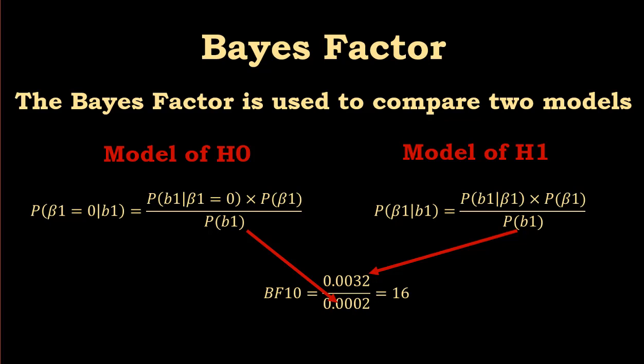When the Bayes factor value is higher than 1, that means the model of the alternative hypothesis is more likely than the model of the null hypothesis. If the Bayes factor is exactly 1, that means both models have the same probability — the data has the same probability under each model. When the Bayes factor is less than 1, that means the model of the null hypothesis is more likely than the model of the alternative hypothesis.